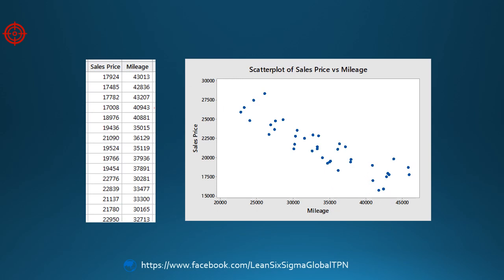Let's evaluate the data for the ABC car. Look at the fourth row. The mileage is 40,943 and the sales price equals $17,008. Here it is on the plot. This data point is called the observed value, because it is the response value obtained from the sample.